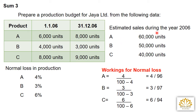Additional data: estimated sales during the year — A = 60,000 units; B = 50,000 units; C = 40,000 units. Normal loss in production — loss that occurs normally during production. A = 4% loss; B = 3%; C = 6%. Workings for normal loss: A = 4 / (100 − 4) = 4/96; B = 3 / (100 − 3) = 3/97; C = 6 / (100 − 6) = 6/94.